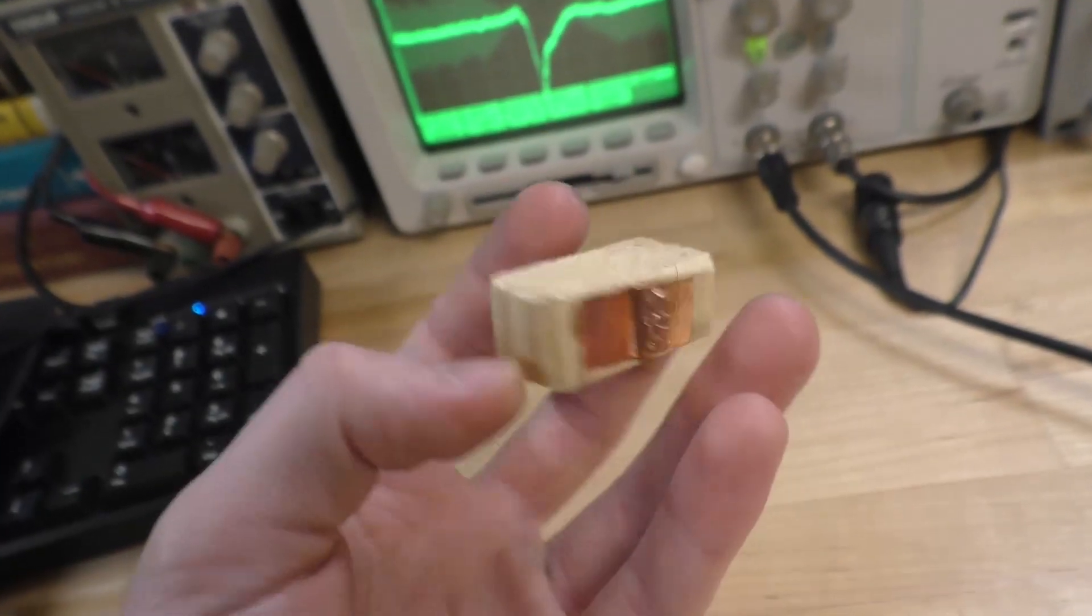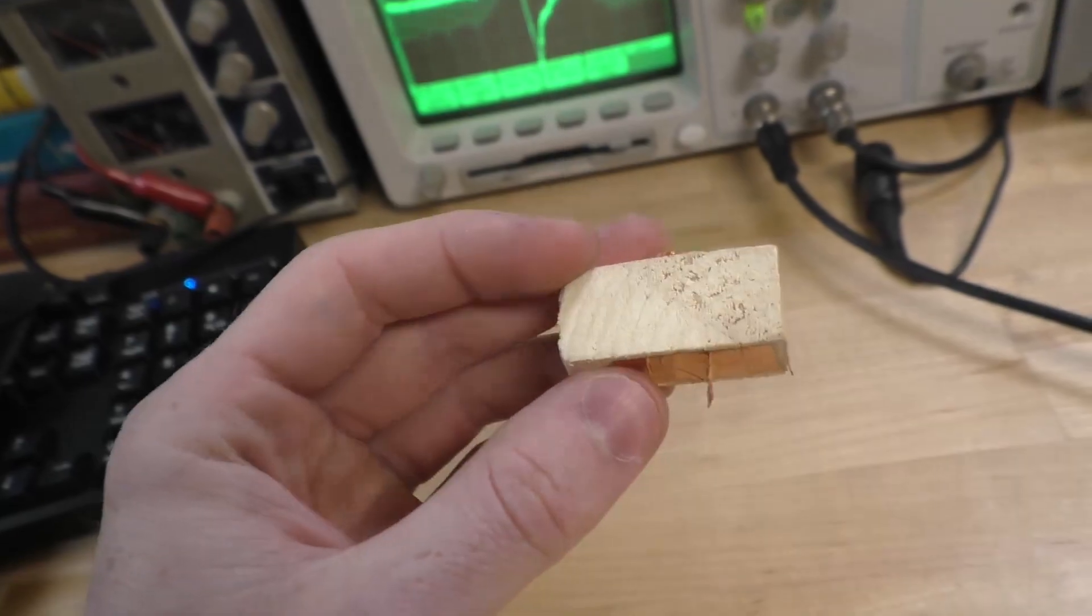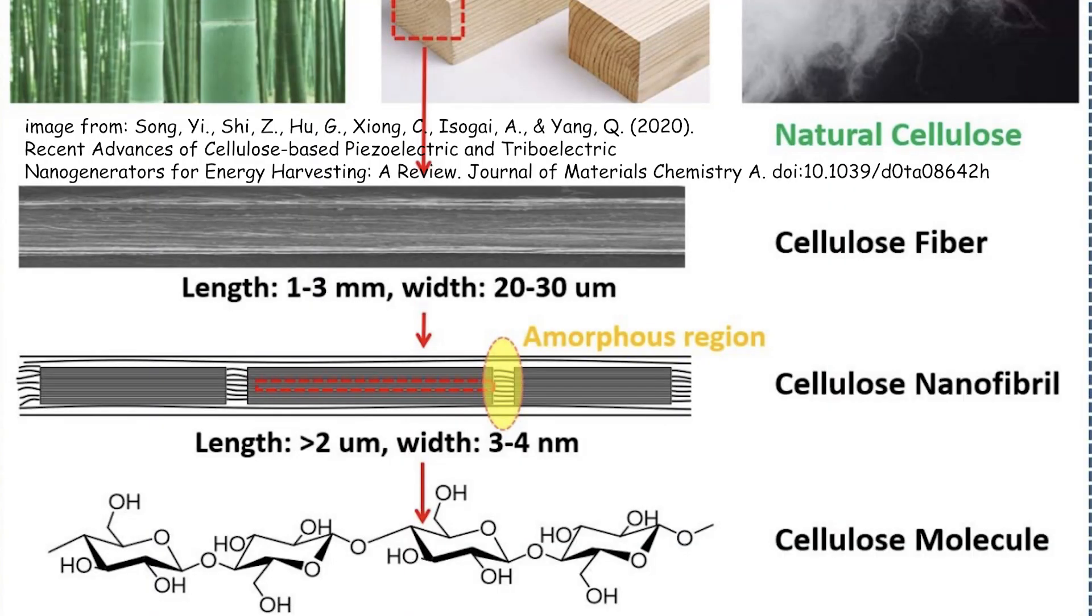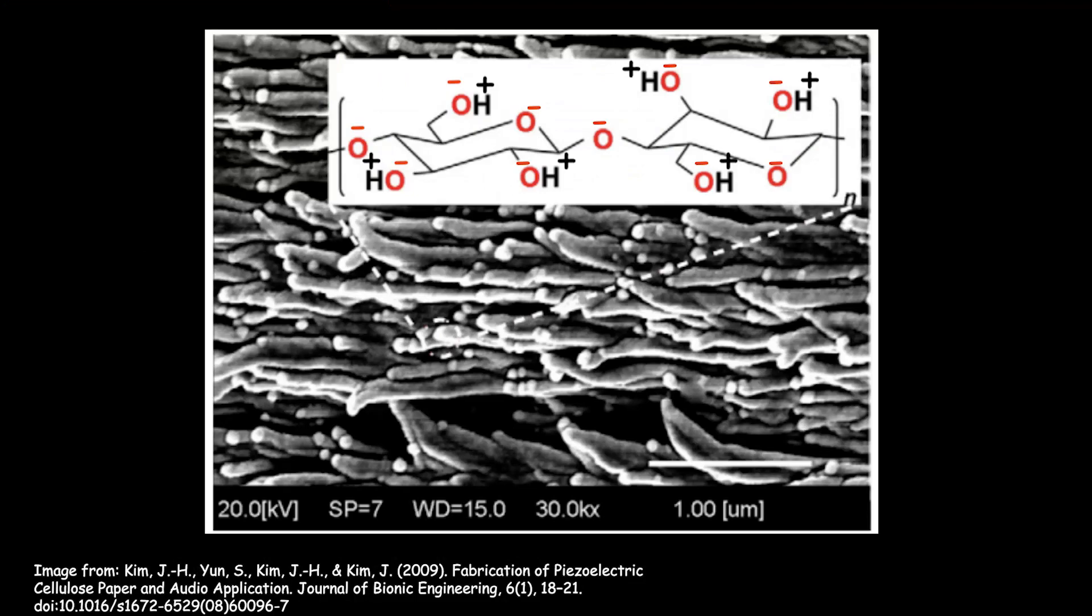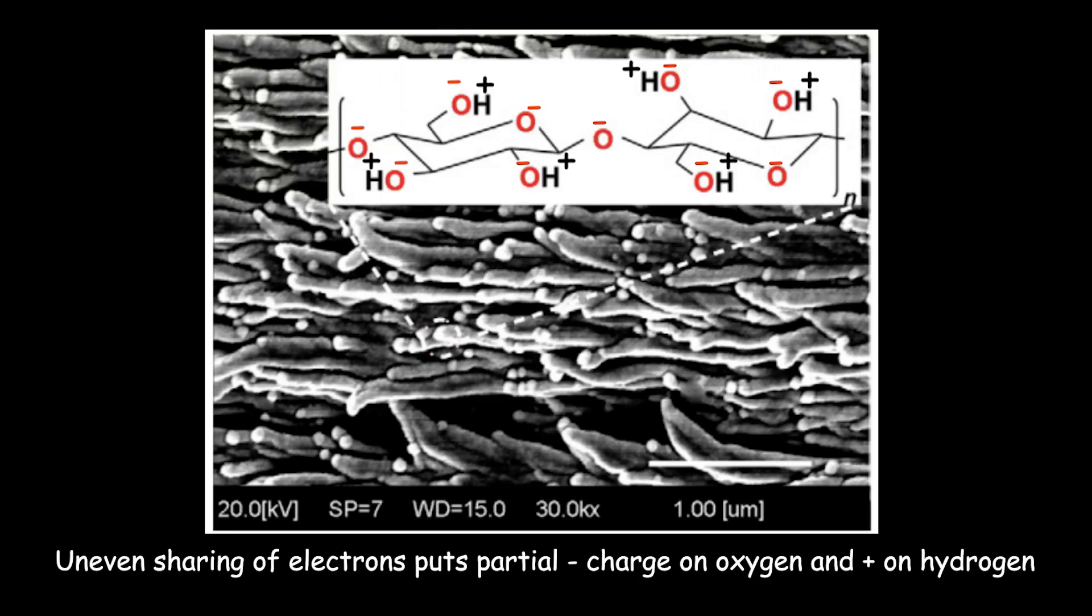Wood's an insulator, so it's very strange that it can actually act as a current source. The cellulose fibers inside wood are arranged in an asymmetrical but regular pattern. Normally there's negative and positive charges evenly distributed.